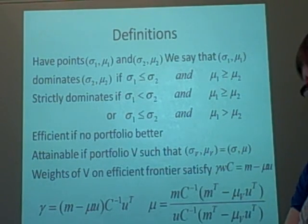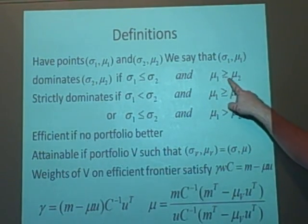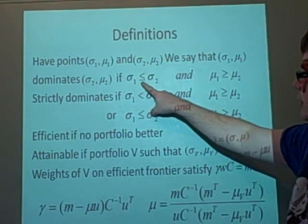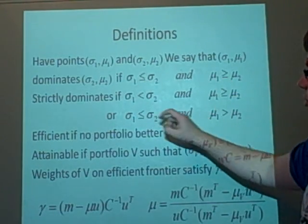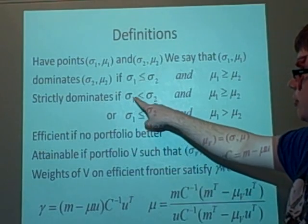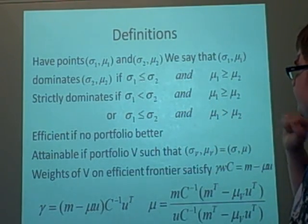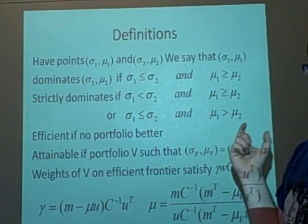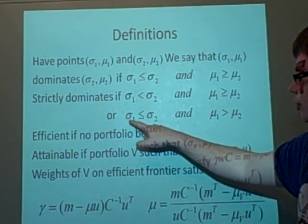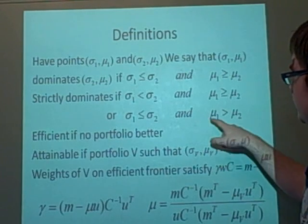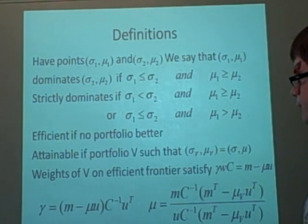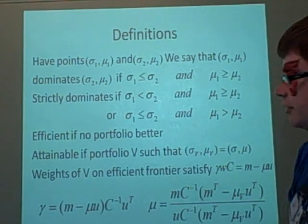And we say it strictly dominates if we can remove one of these equals, so either this one or this one. So it strictly dominates if the risk is less and the return is either the same or more, or the risk is the same or less and the return is greater. So it's a better scenario.